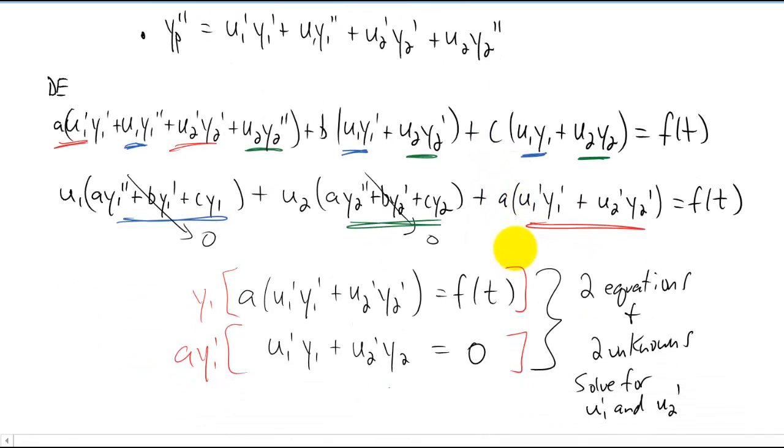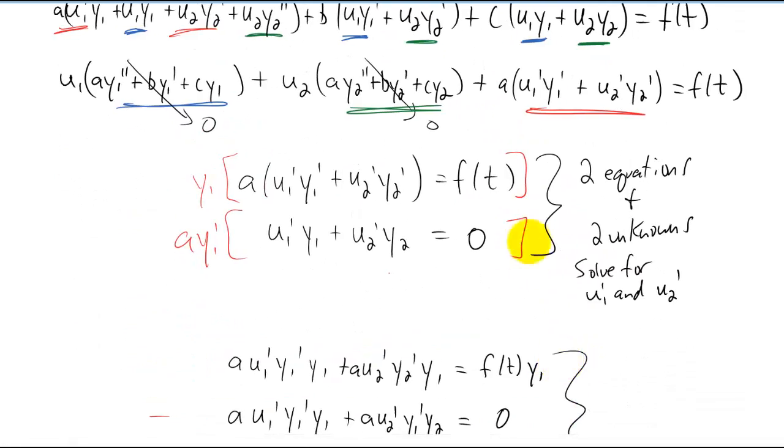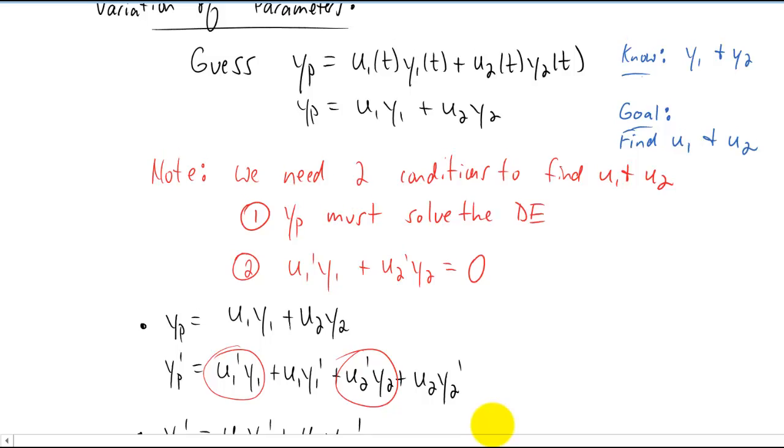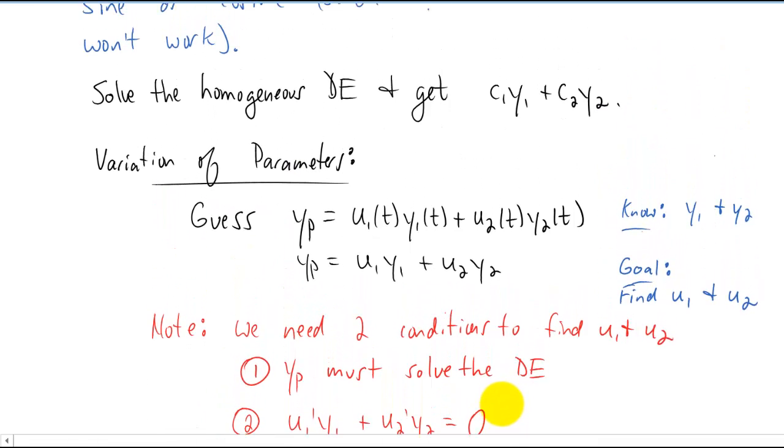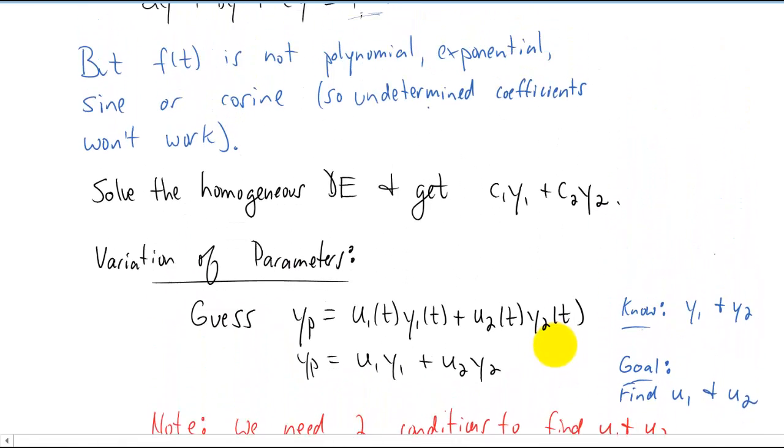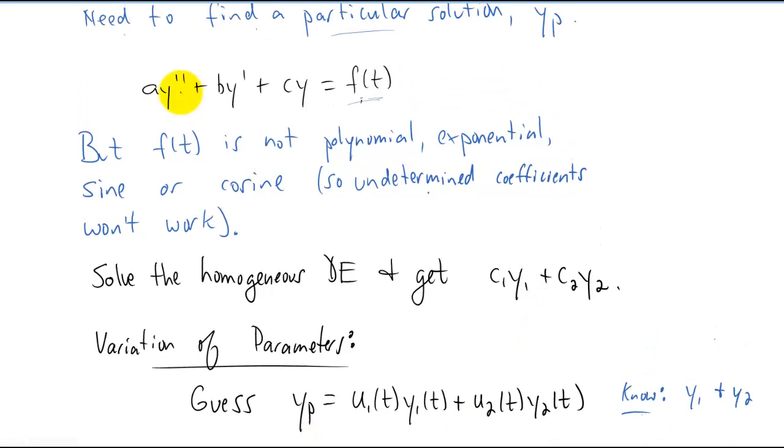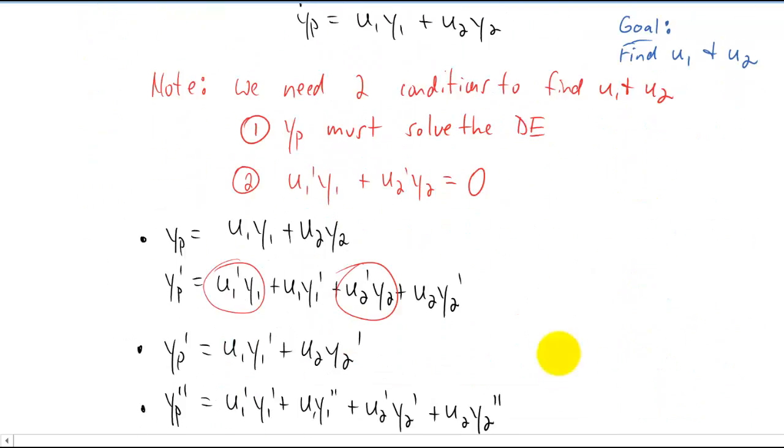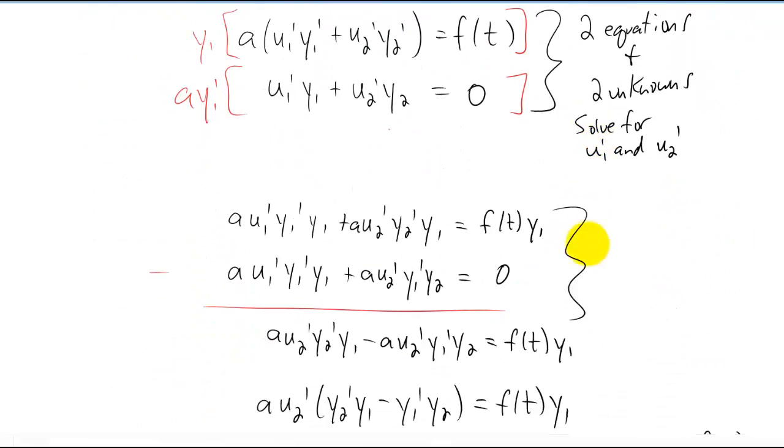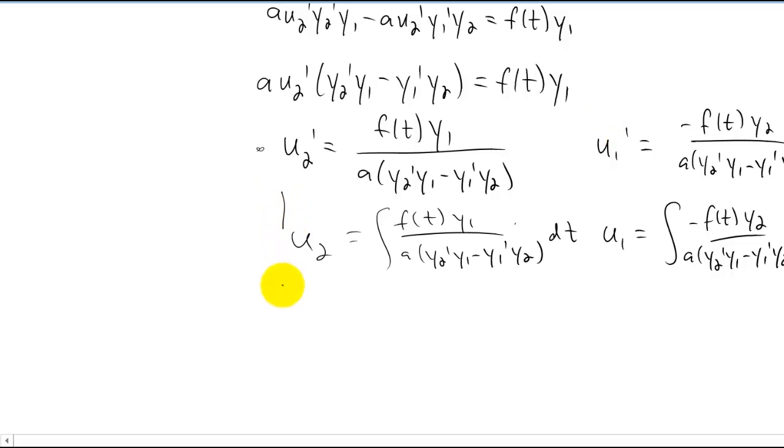Now through all of this mess that we just ran through, all of this derivation, ultimately what we've come up with is two formulas that we can use for u1 and u2 to find our particular solution given a non-homogeneous differential equation that looks something like that. Those two equations that we're always going to use from now on are all the way down here.